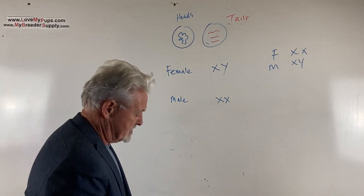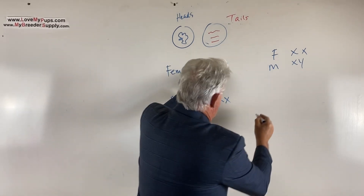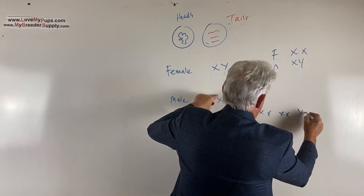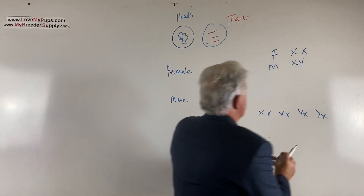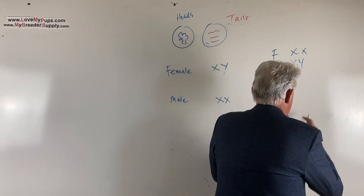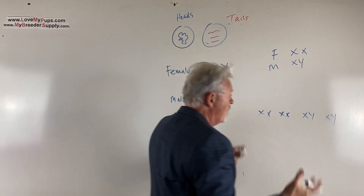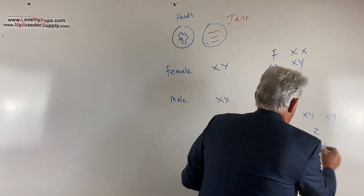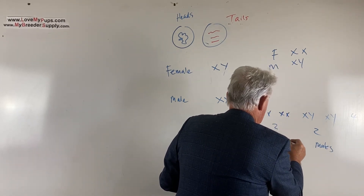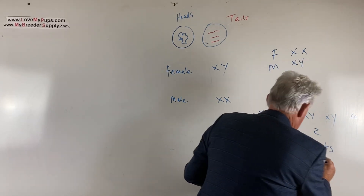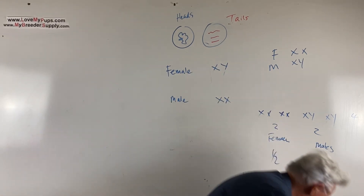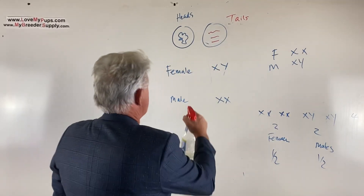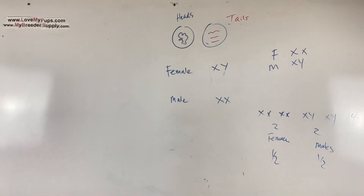The other way to look at this: list all possible outcomes — XX, XX, XY, XY — that's four possible outcomes of which two are males and two are females. So there is your two out of four, or half females and half males. Hopefully that makes sense when you see it this way.